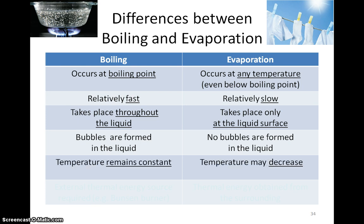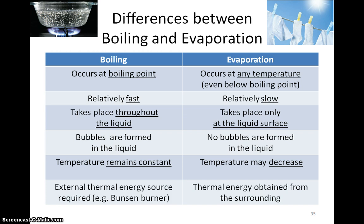During boiling, the temperature of the liquid remains at boiling point, but during evaporation, the temperature of the liquid may decrease due to the cooling effect of evaporation. Lastly, for boiling to occur, we usually need an external thermal energy source, such as the Bunsen burner. On the other hand, the thermal energy required for evaporation to occur is obtained from the surrounding.